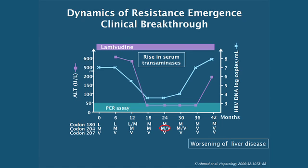Associated with that viral load increase, often six to eight months after the viral load has broken through with a greater than one log increase, serum ALT and other transaminases also start to rise. If a liver biopsy were done, you would see a significant worsening of liver disease. All of the benefit obtained with lamivudine in the first 12 to 18 months is lost because of the emergence of drug resistance, the return of viral replication, and the progression and worsening of liver disease.